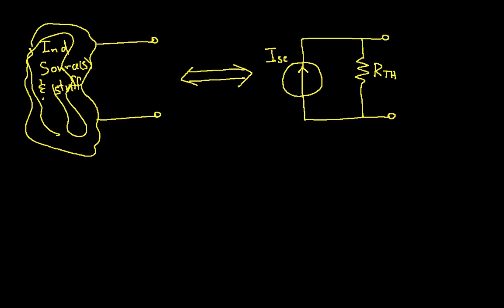Now this is very similar to the Thevenin equivalent, where all of this stuff over here was equivalent to a voltage source in series with the resistor. And in fact, you'll notice that we use the same terminology for the current source and the equivalent resistance as we did in the Thevenin equivalent circuits. And in fact, you'll notice that we even call the equivalent resistance R-Thevenin because it's the same as the Thevenin equivalent resistance.